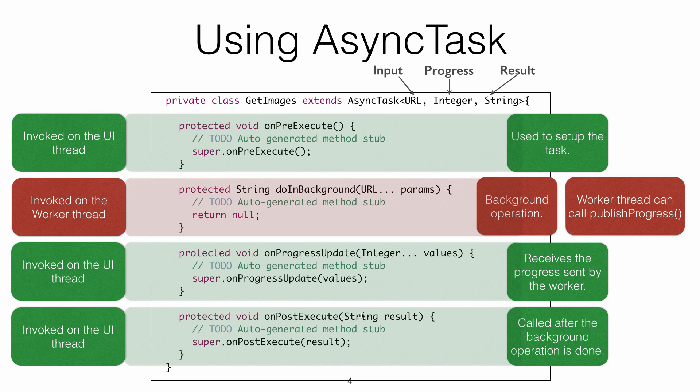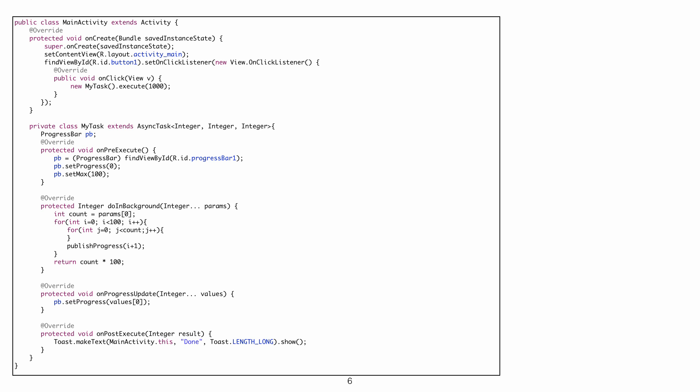Looking at the input, progress, and result types again: the URL input type is passed to doInBackground; the Integer progress type is the input parameter to onProgressUpdate; and the String result type is returned by doInBackground and received by onPostExecute.